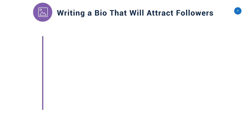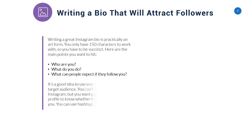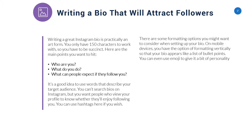Writing a bio that will attract followers. Writing a great Instagram bio is practically an art form. You only have 150 characters to work with, so you have to be succinct. Here are the main points you want to hit: Who are you? What do you do? What can people expect if they follow you? It's a good idea to use words that describe your target audience. You can't search bios on Instagram, but you want people who view your profile to know whether they'll enjoy following you. You can use hashtags here if you wish. On mobile devices, you have the option of formatting vertically so that your bio appears like a list of bullet points. You can even use emoji to give it a bit of personality.